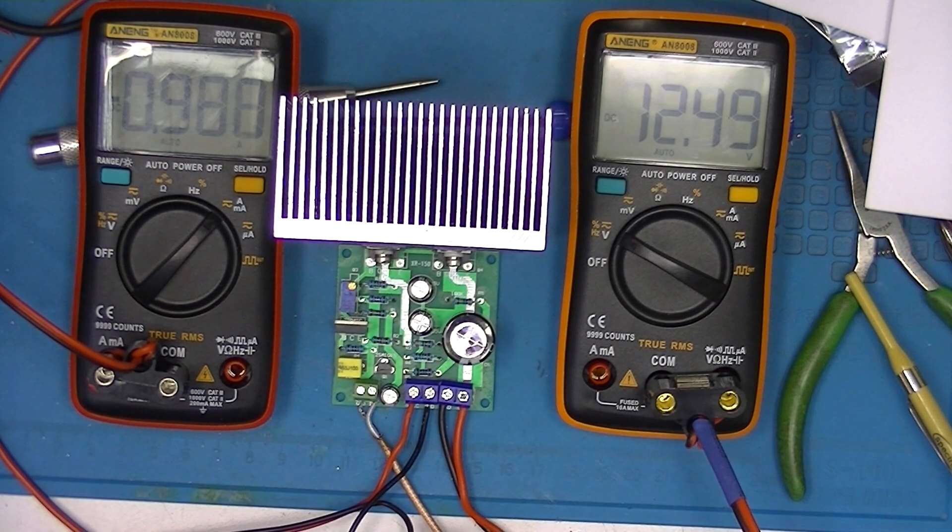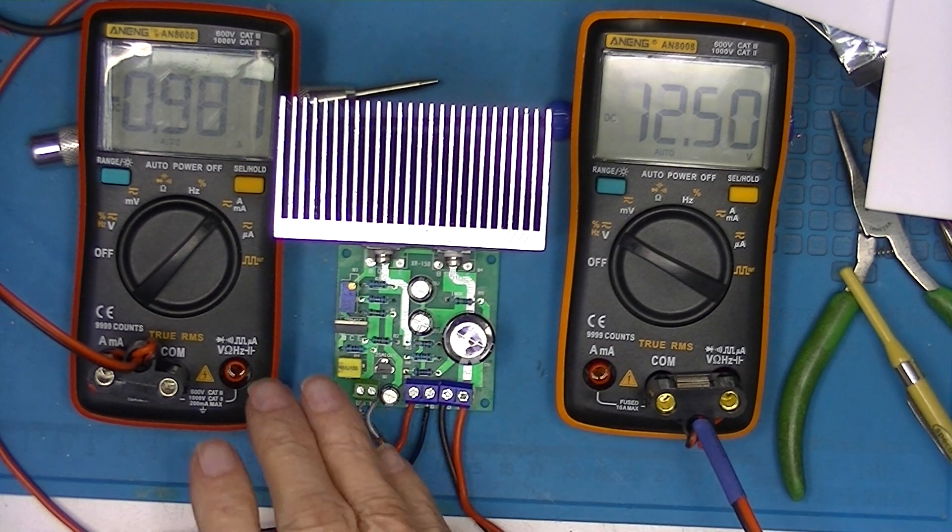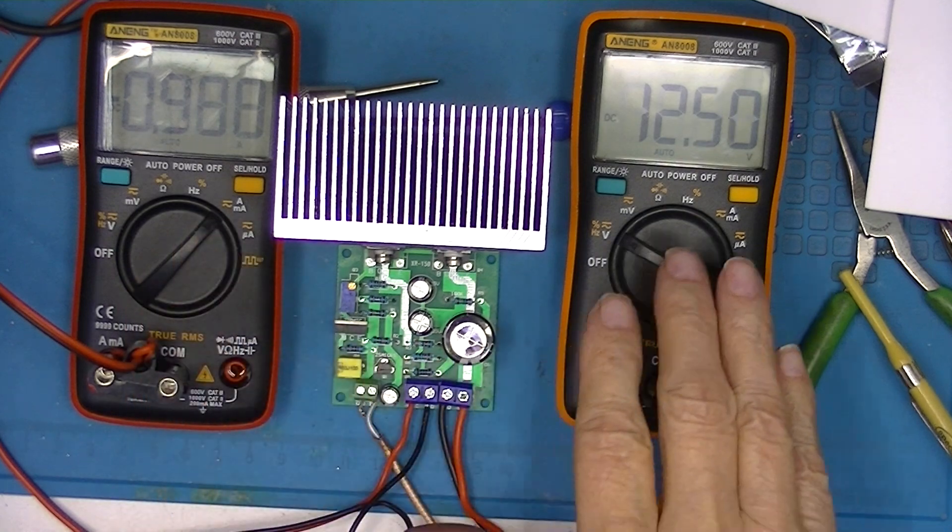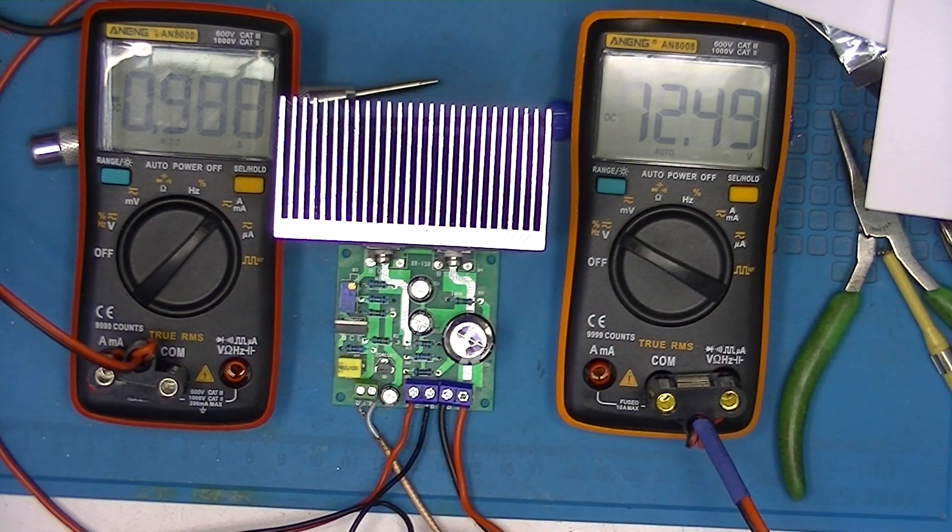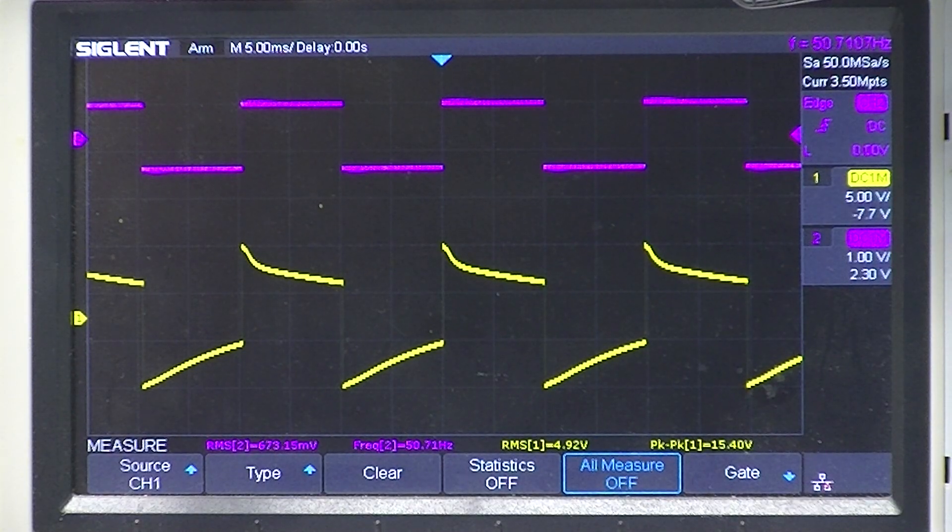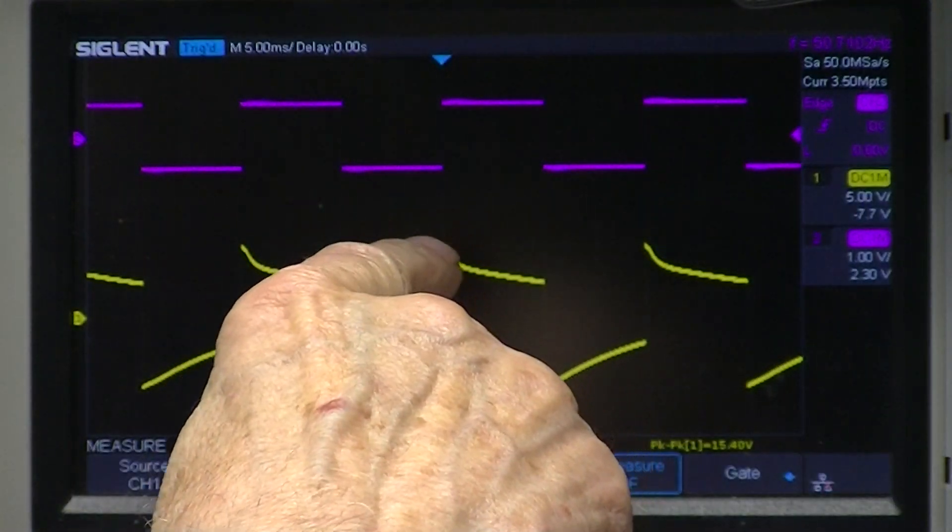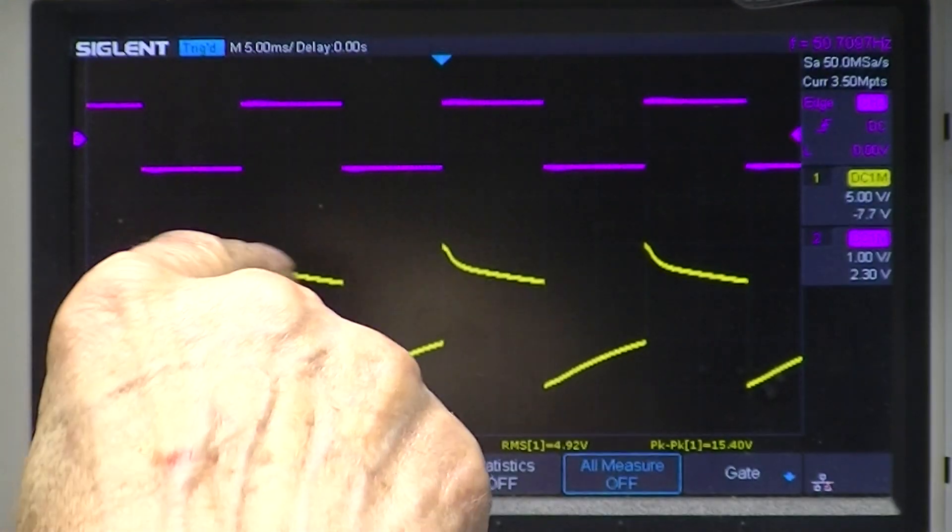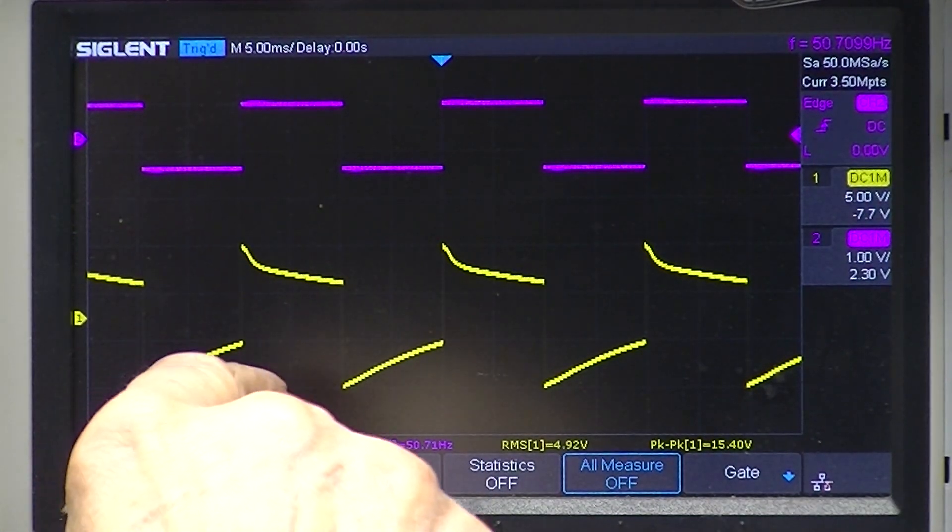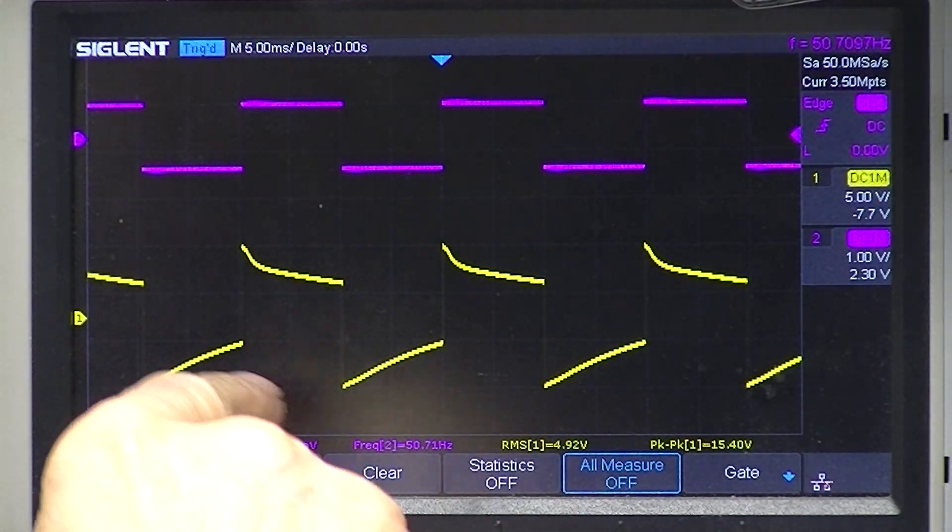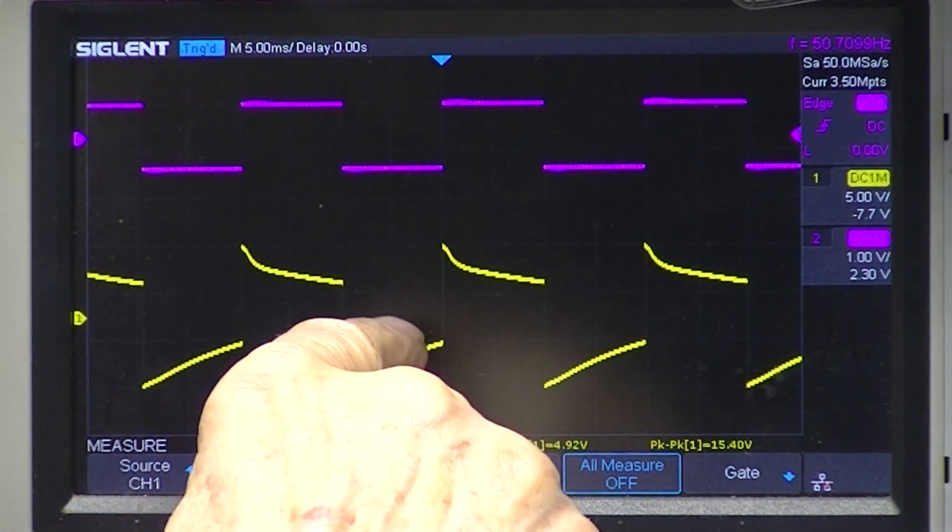Here we are with the second amplifier hooked up. Call that an amp. This is 12.5 volts. Looking at the oscilloscope, we've got a nice square wave from the function generator. Frequency is 50 hertz. And we've got this.